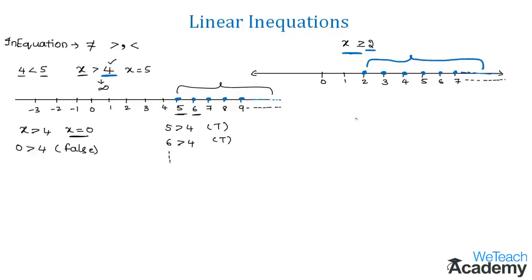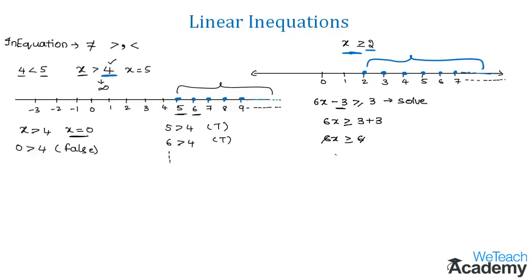Here we have another example: the inequation 6x - 3 ≥ 3. Let us solve this. First, let us move -3 to the other side, giving 6x ≥ 3 + 3, which is 6x ≥ 6. We can cancel 6 on both sides, and we get x ≥ 1.